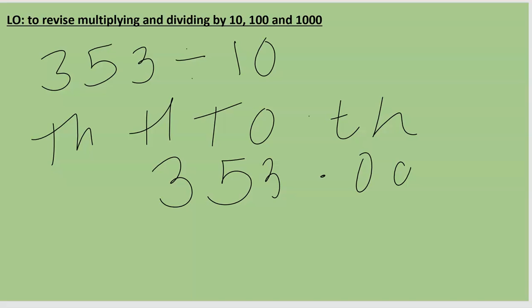And 10 has one placeholder, so I know I'm going to move all my numbers one place to the right. I'm going to add in my decimal point so I don't forget, and hopefully if you've done it too, you have the answer 35.3. There are no gaps here before the decimal point and there are no gaps here, so I do not need to add in any placeholders.